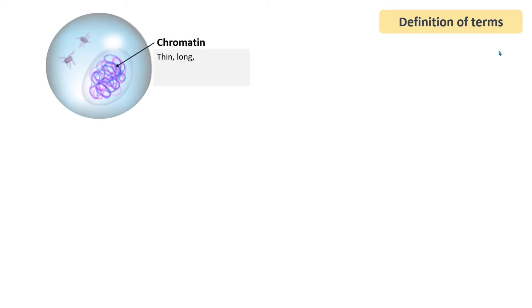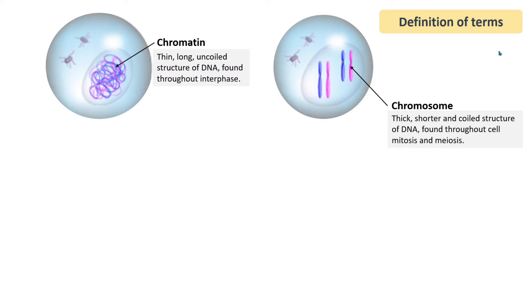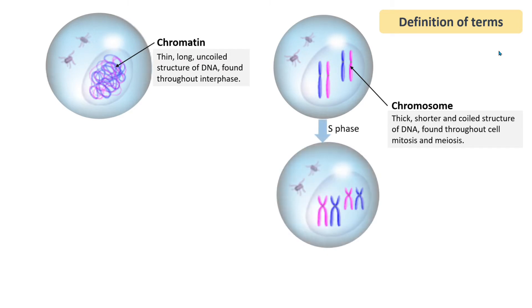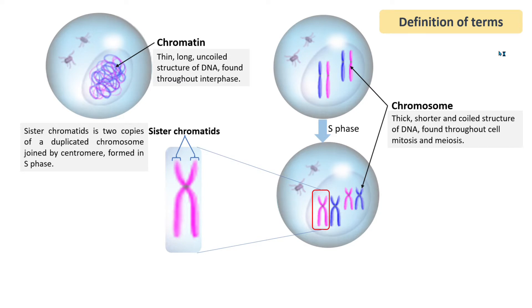For better understanding, you need to know the definitions of these terms. Firstly, chromatin is a thin, long, uncoiled structure of DNA found throughout interphase. Next, a chromosome is a thick, shorter, and coiled structure of DNA found throughout cell mitosis and meiosis. Next, sister chromatids are two copies of a duplicated chromosome joined by a centromere, formed in S phase.